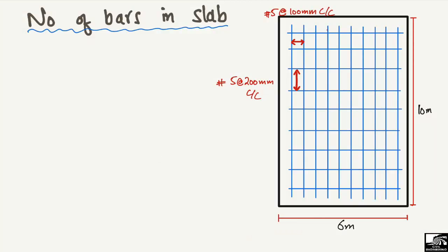Welcome back to E7 Engineering YouTube channel. In today's lecture, we are going to find out the number of bars in a slab. This is a slab given to us with known dimensions — the length of the slab is 10 meters and the width of the slab is 6 meters. We have to find the number of bars in both directions.